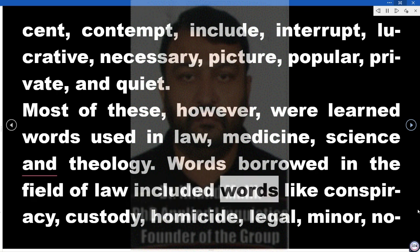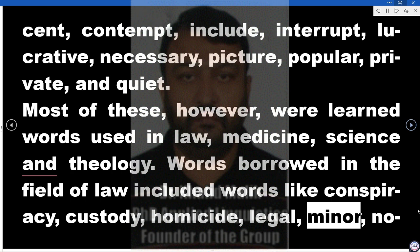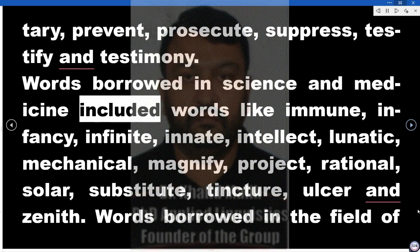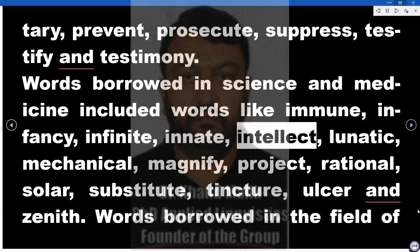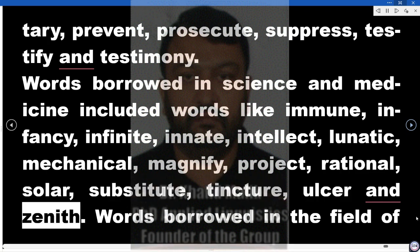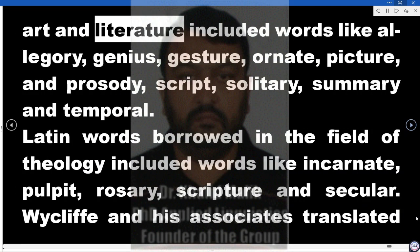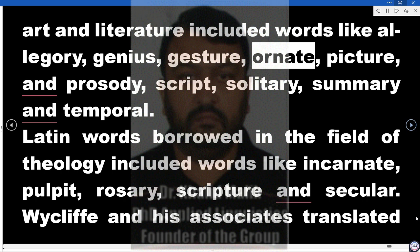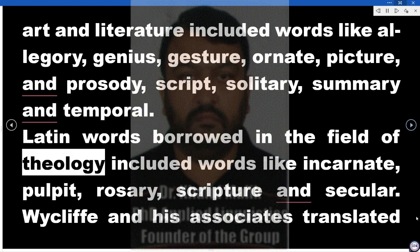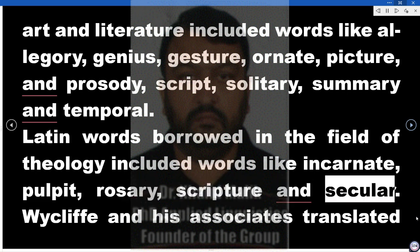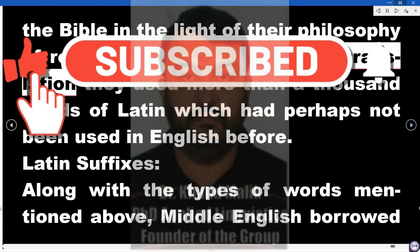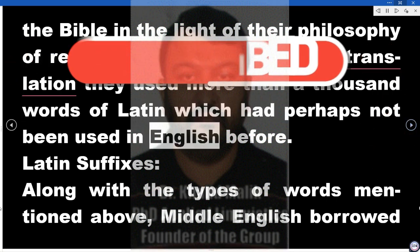Words borrowed in the field of law included words like conspiracy, custody, homicide, legal, minor, notary, prevent, prosecute, suppress, testify, and testimony. Words borrowed in science and medicine included words like immune, infancy, infinite, innate, intellect, lunatic, mechanical, magnify, project, rational, solar, substitute, tincture, ulcer, and zenith. Words borrowed in the field of art and literature included words like allegory, genius, gesture, ornate, picture, prosody, script, solitary, summary, and temporal. Latin words borrowed in the field of theology included words like incarnate, pulpit, rosary, scripture, and secular. Wycliffe and his associates translated the Bible in the light of their philosophy of religious reforms and in their translation used more than a thousand words of Latin which had perhaps not been used in English before.